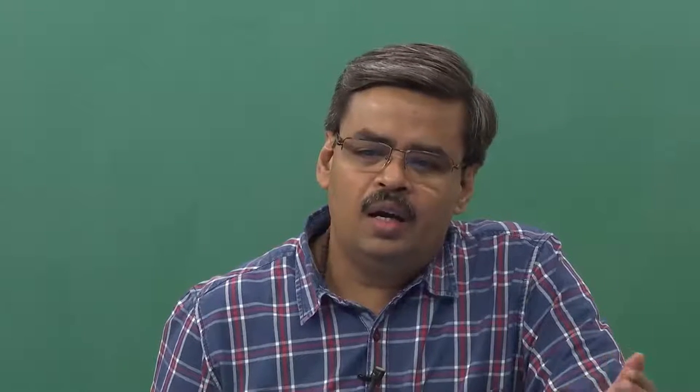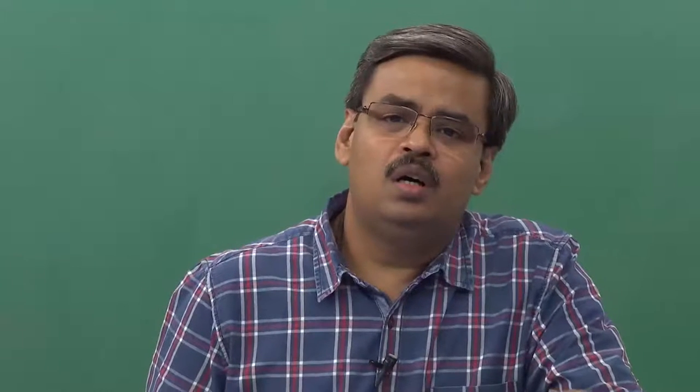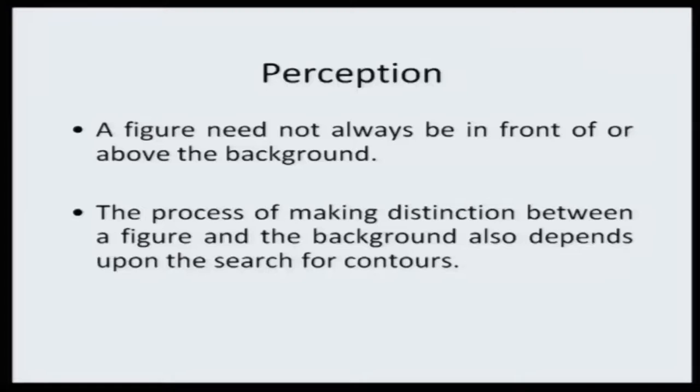We ended the second lecture saying that one always has to extract the figure against the background. This idea of categorizing figure versus background is an important phenomenon in perception. Figure and background could be interchangeable, and we always look for contours. If we are able to establish them, well and good; if not, we have confusion. Towards the end we would also take examples of reversible figures — where half the figure becomes the background and the remaining half becomes the figure, and it keeps changing depending on what you consider as background.